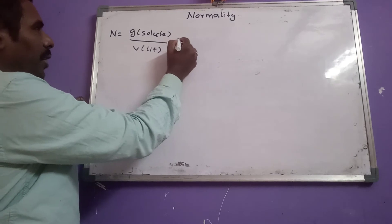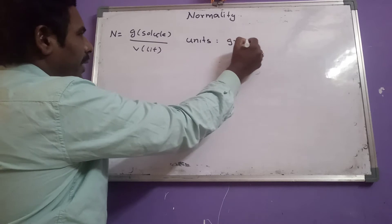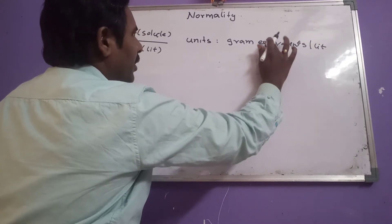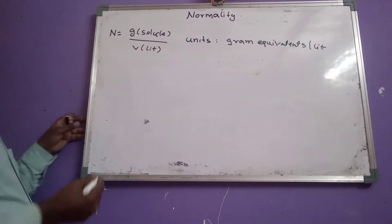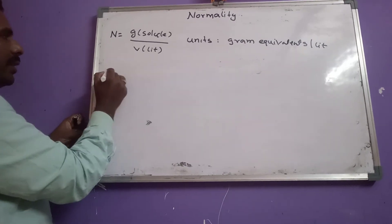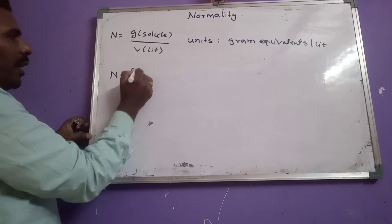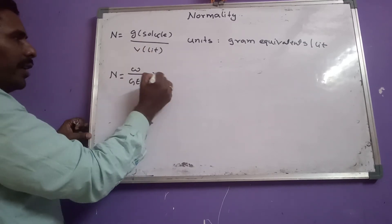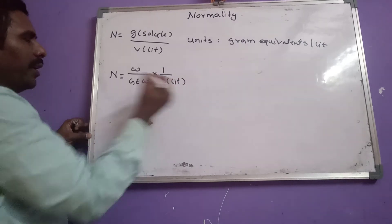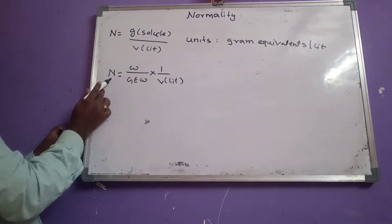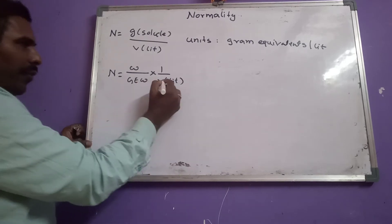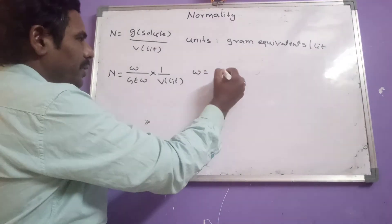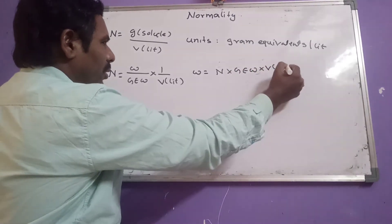The units of normality are gram equivalents per liter. The gram equivalents formula: number of gram equivalents is calculated by weight divided by gram equivalent weight. So, normality equals weight divided by gram equivalent weight, multiplied by 1 divided by volume in liters. From this formula, one can measure the normality of any solution.